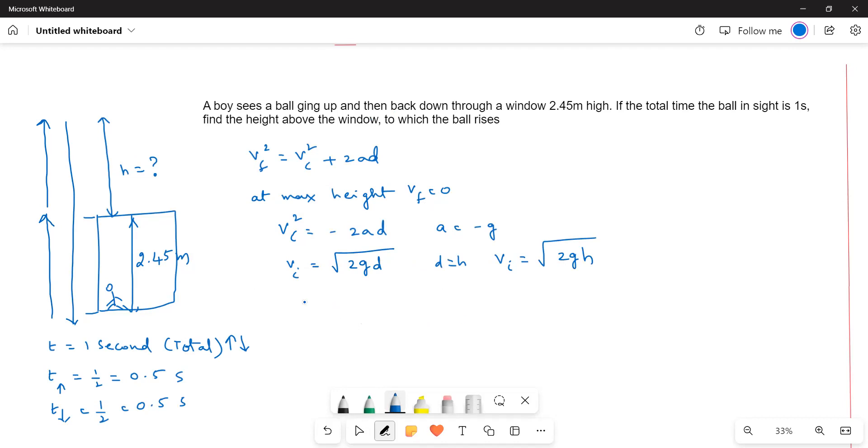Next, what we have to do is, we have to find out the H. So for that, what we do, here D is equal to VIT plus half AT squared. This equation will hold good for this one. In this, we know VI. T is given as 0.5 seconds. And then A, we know G value. And then T we know. So let us find out.